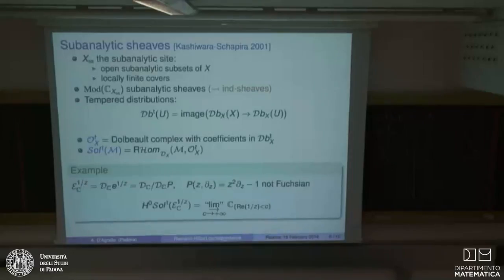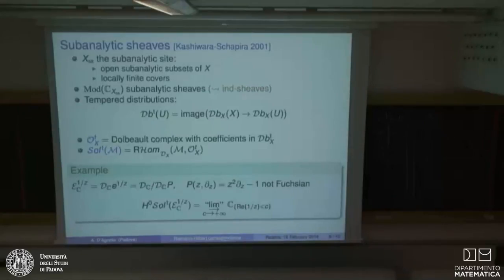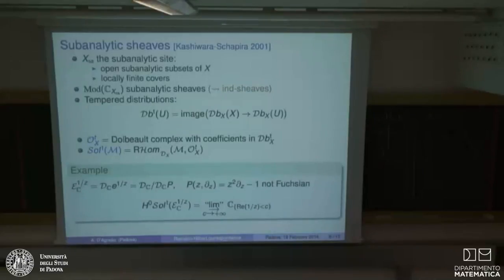This new solution complex keeps track of data coming from the irregularity of the system. However, this is not enough to treat the general case: if you take e^{1/z} or e^{2/z}, the systems are cofinal and give the same result. You cannot distinguish them, but they are not at all isomorphic as D-modules. So you need something more.